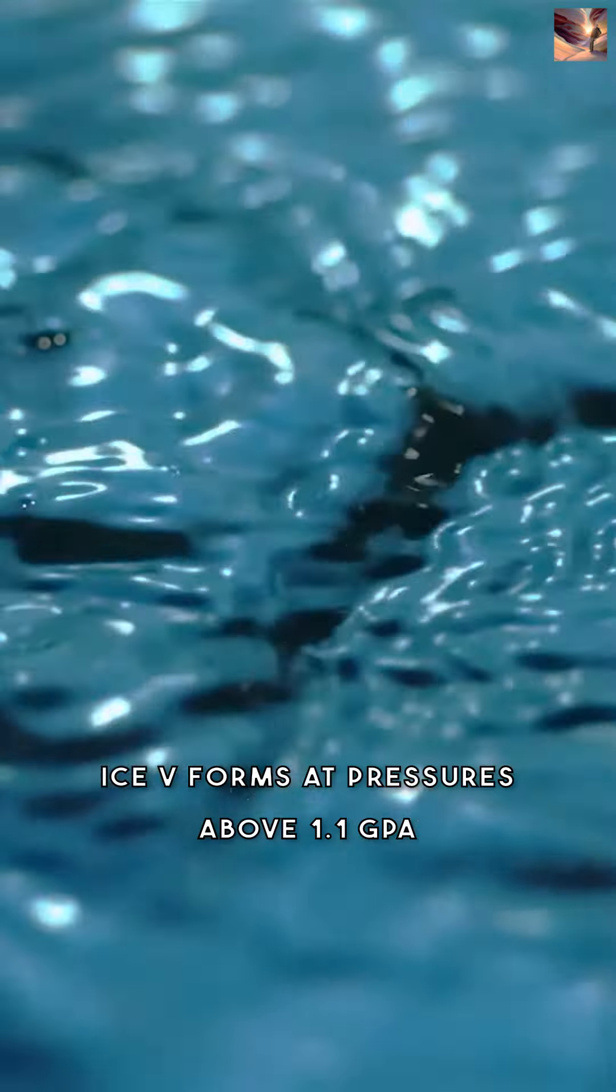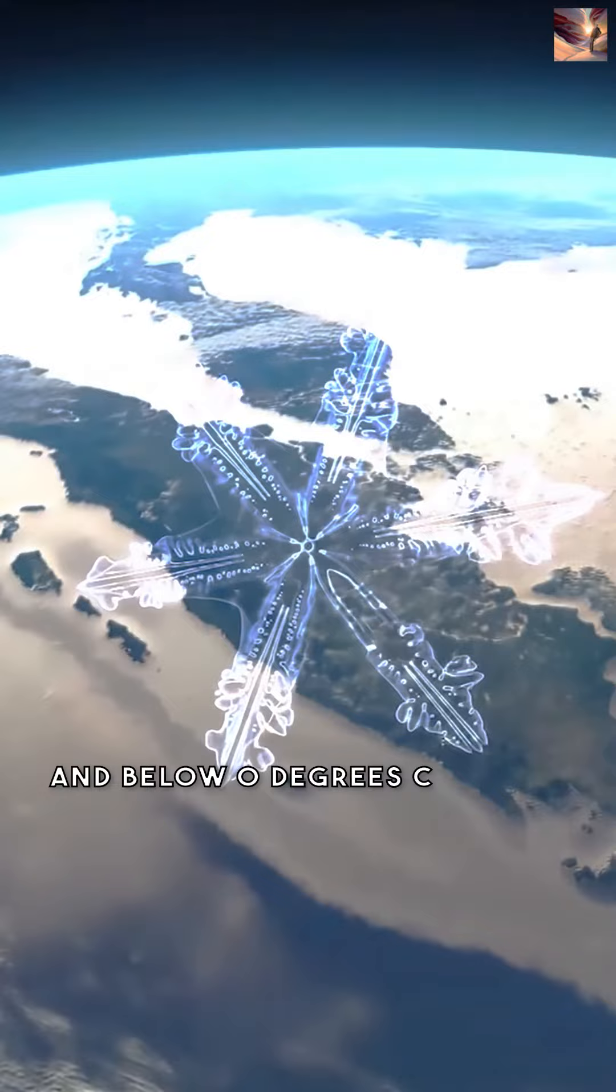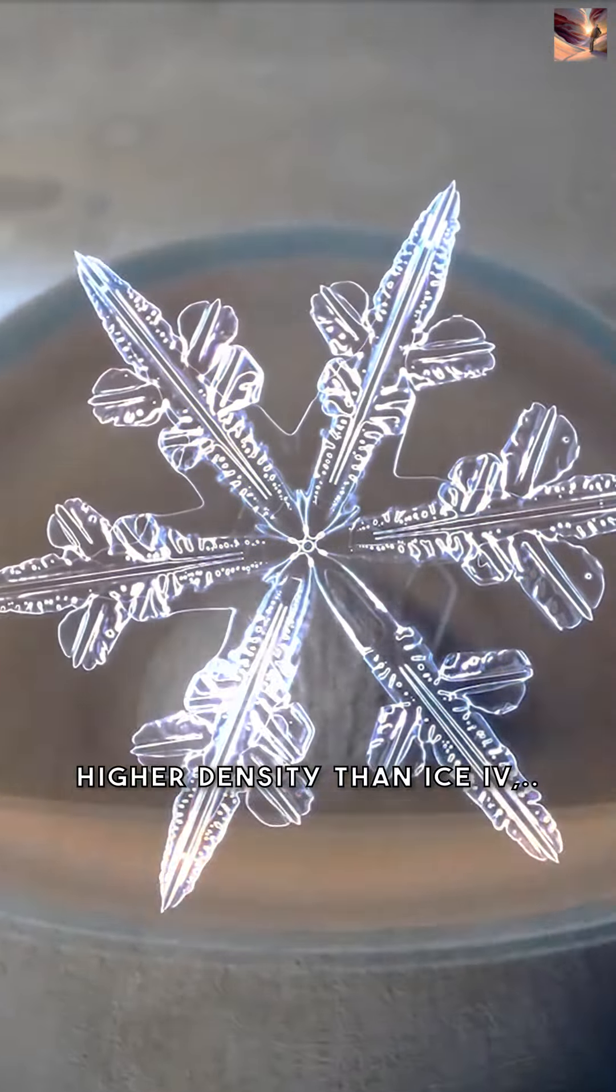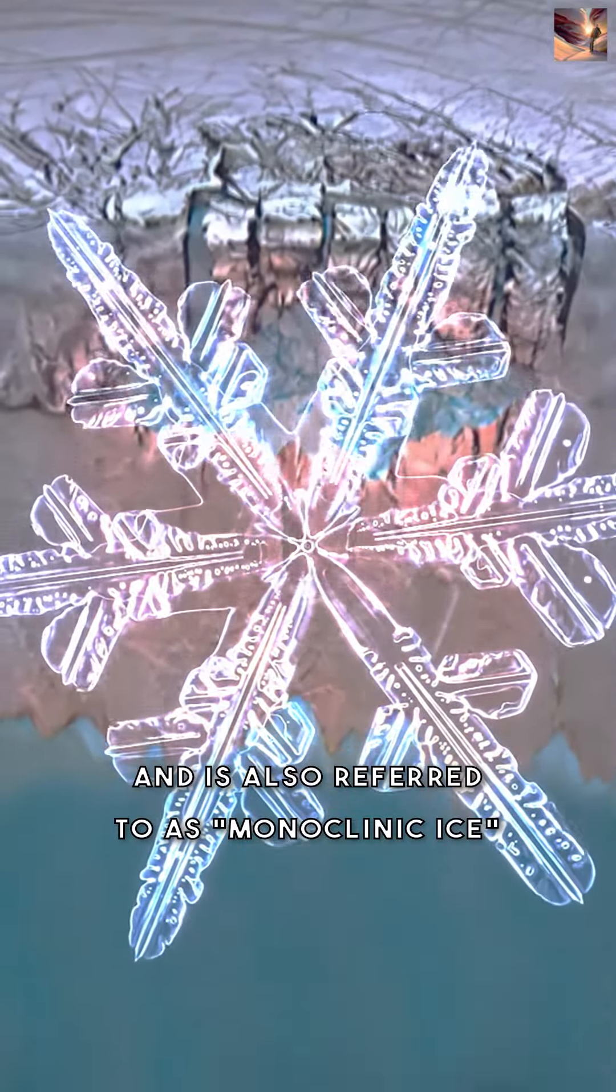Ice 5 forms at pressures above 1.1 gigapascals and below 0 degrees Celsius, with a monoclinic crystal structure. It has higher density than ice 4 and is also referred to as monoclinic ice.